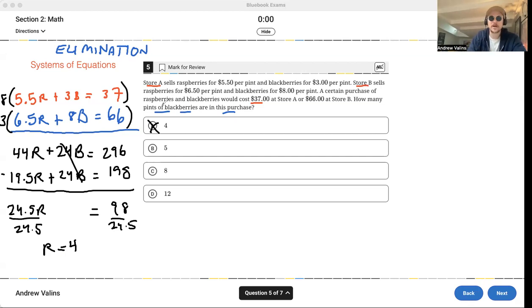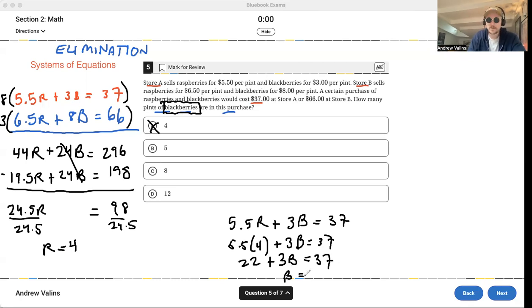The answer is not 4, though, because we've got to always, golden rule, check back with the question. The question does not want raspberries. The question wants blackberries. So we've got to go back and pick an equation. Let's take the first one, 5.5R plus 3B equals 37. And we're going to plug in our R, which is 4. So 5.5 times 4 plus 3B equals 37. 5.5 times 4 is 22. Plus 3B equals 37. And if we do the math, we're going to get B equals 5. I skipped a couple steps there, but you can handle it because you're tough. So the answer is 5.